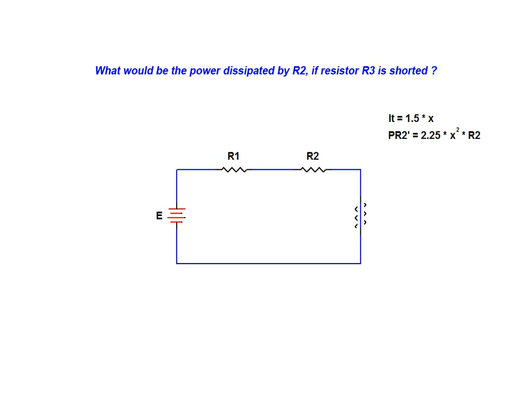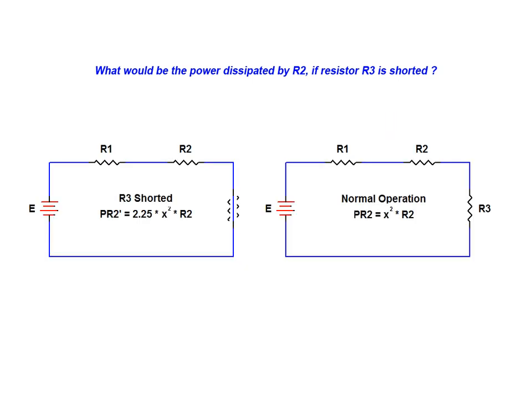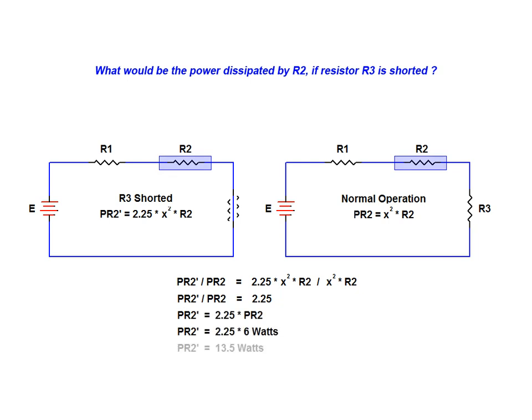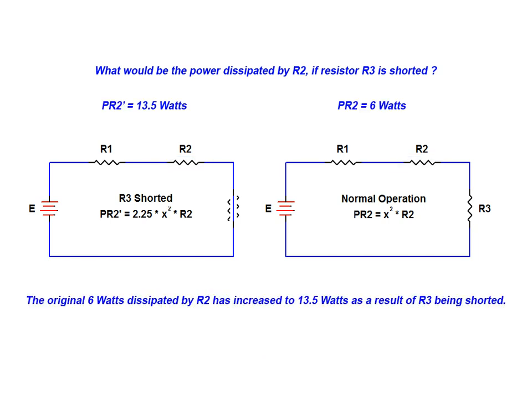Now that we have equations representing the R2 power under both circuit conditions, we can proceed to solve the example problem. As is evident from our previous analysis, the resulting power for R2 under the shorted circuit conditions will be 13.5 watts. This is significant to note as it is not entirely intuitive.